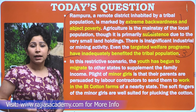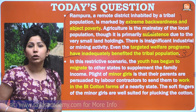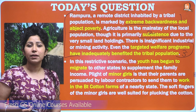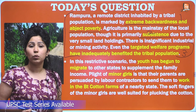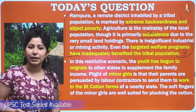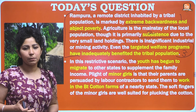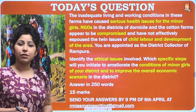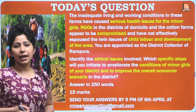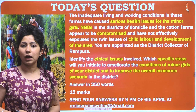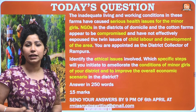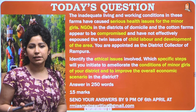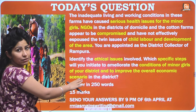In this restrictive scenario, the youth has begun to migrate to other states to supplement family income. Plight of minor girls is that their parents are persuaded by labor contractors to send them to work in BT cotton farms of a nearby state. The soft fingers of minor girls are well suited for plucking cotton. Inadequate living and working conditions in these farms have caused serious health issues. NGOs in the districts appear compromised and have not effectively addressed child labor and development of the area.